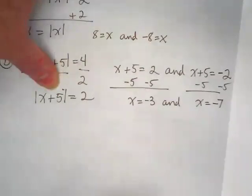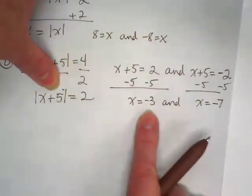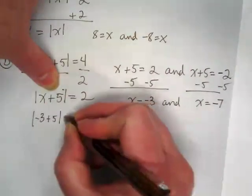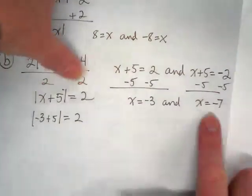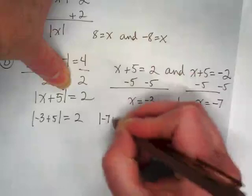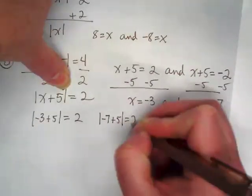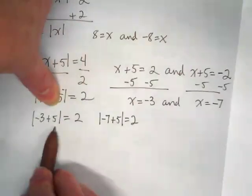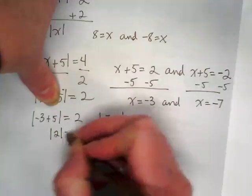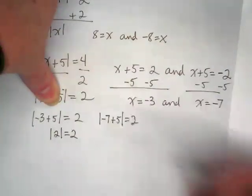So let's just visualize going back to this. If I put that negative 3 in for X, and if I put this negative 7 in for X, is negative 3 plus 5 a 2? I get the absolute value of 2 is equal to 2. Does that work? Yes.